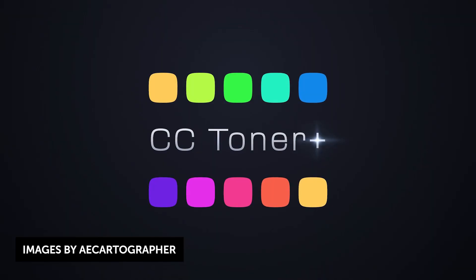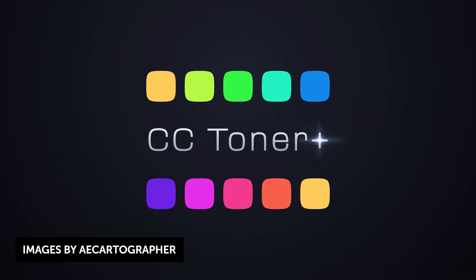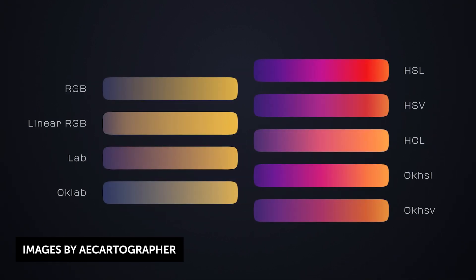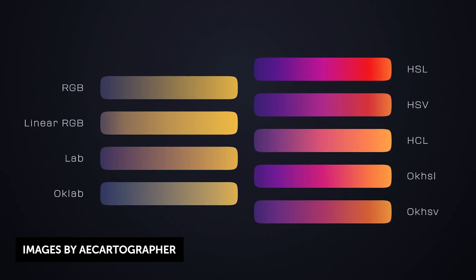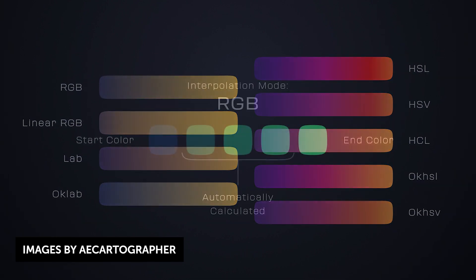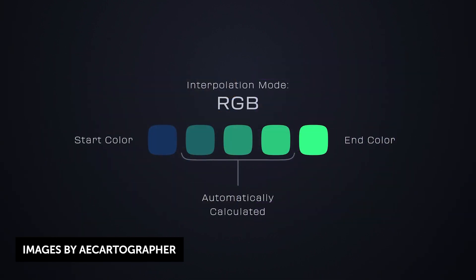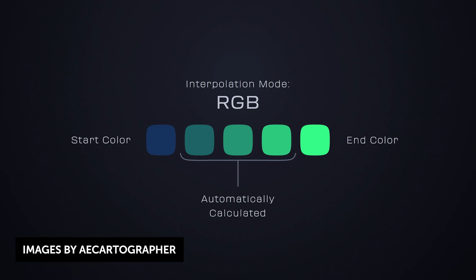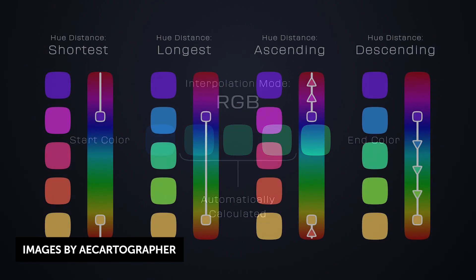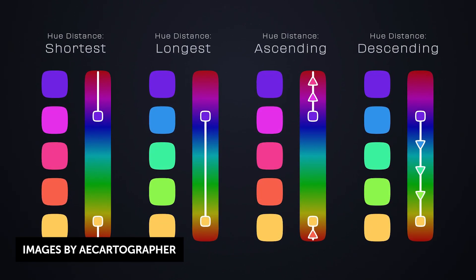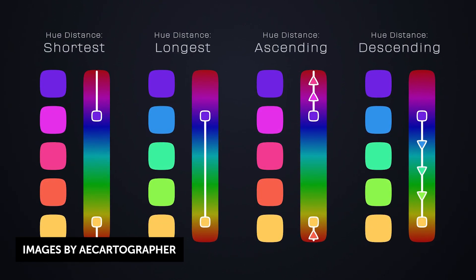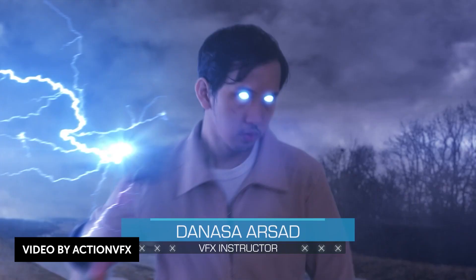If you've used the CC Toner effect, you need to check out this preset called CC Toner Plus by AE Cartographer. It's a rigged up preset that automatically interpolates colors between the highlights and shadows. It features three different modes and comes with a lot of other color controls. You can use this to really drive color palettes in your designs. It's also a name-your-own-price preset, so check it out down below.